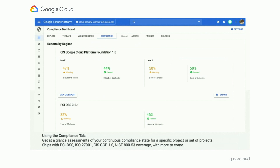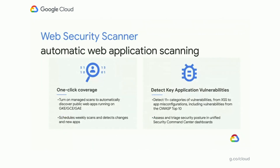Your security posture is made up of more than just resource configurations — it's also important to monitor against vulnerabilities in your web applications. Security Command Center includes Web Security Scanner for that purpose. Web Security Scanner automatically detects and scans your exposed public web applications for the most common and impactful vulnerabilities found in web apps. Like Security Health Analytics, there is minimal configuration overhead required. You just turn on the service, and Security Command Center will automatically detect and configure web application scans for apps running on GAE, GKE, or GCE. These scans crawl your public web applications to detect severe vulnerabilities including categories from the OWASP Top 10, like cross-site scripting and security misconfigurations — the same tools that Google uses to protect and scan its own web applications.